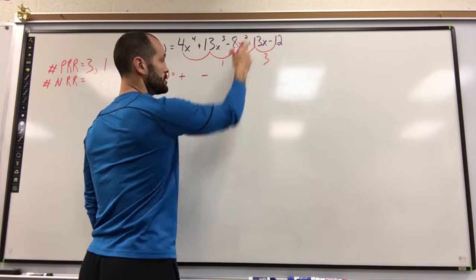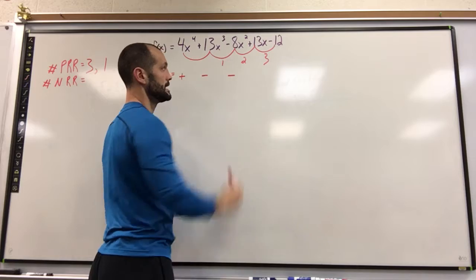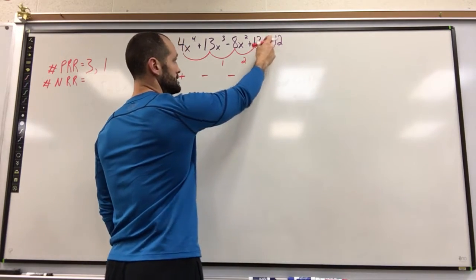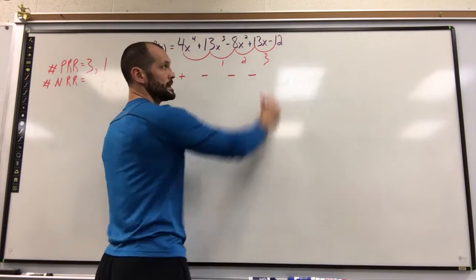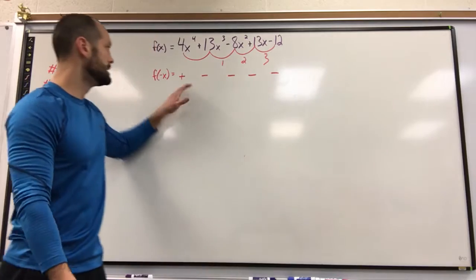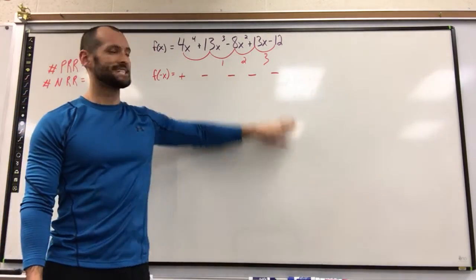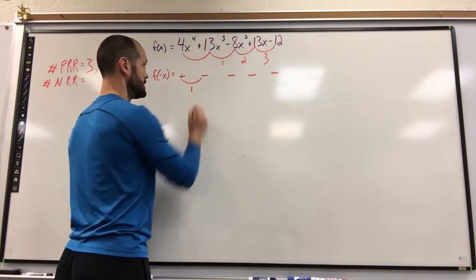Negative x squared will give me a positive times the negative 8 stays negative. Negative x times 13 keeps it negative, and the negative 12 stays negative. I know I did that pretty quickly, but you're only investigating the sign of f of negative x. So you'll notice, look, there's only one sign change.